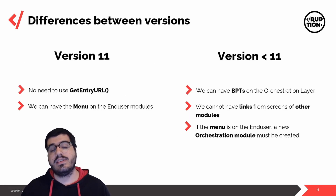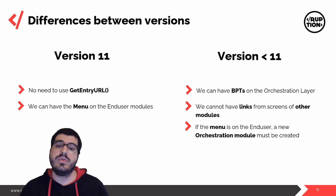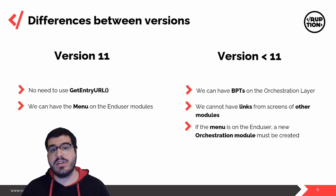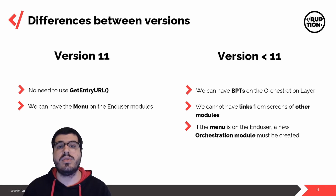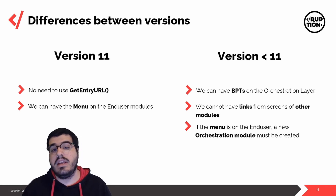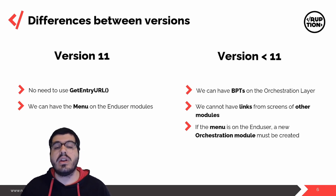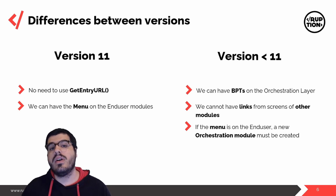On version 11, for example, we no longer need to use the GetEntryURL function since we can reference the screen that is considered the entry — meaning that function is now obsolete — and we can also have our menus on our end-user modules.